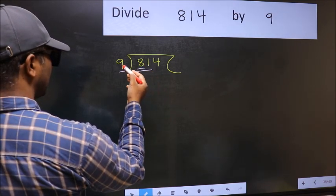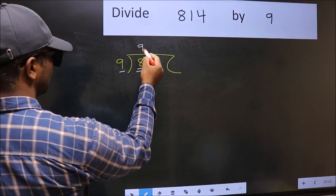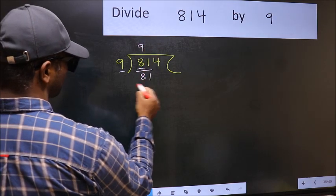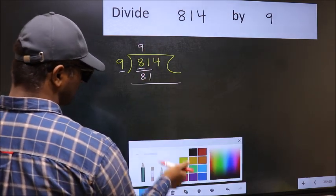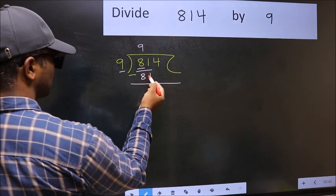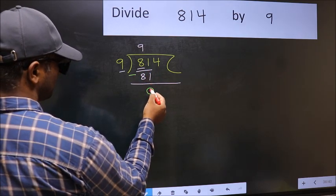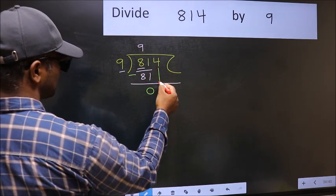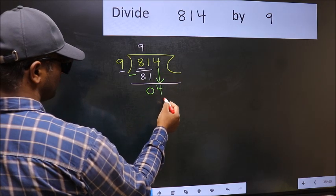When do we get 81 in 9 table? 9 nines 81. Now you should subtract. 81 minus 81, 0. After this, bring down the beside number. So 4 down.